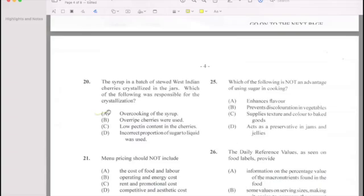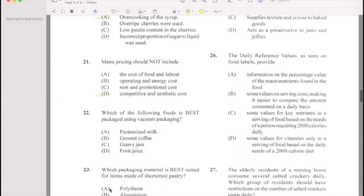Number 22: Menu pricing should not include competitive aesthetic costs. Number 22: Which of the following food is best packaged using vacuum? Brown coffee.